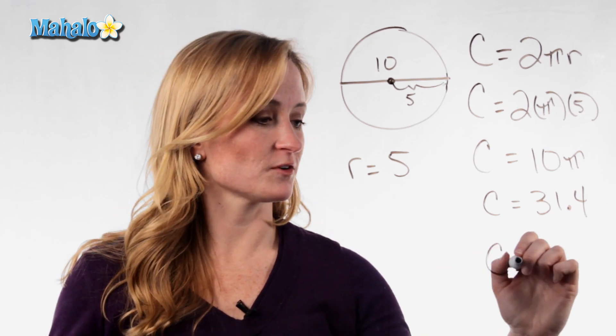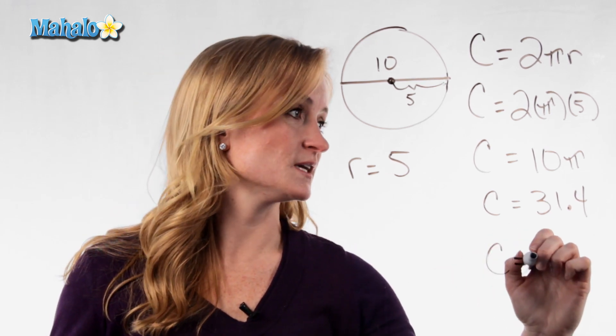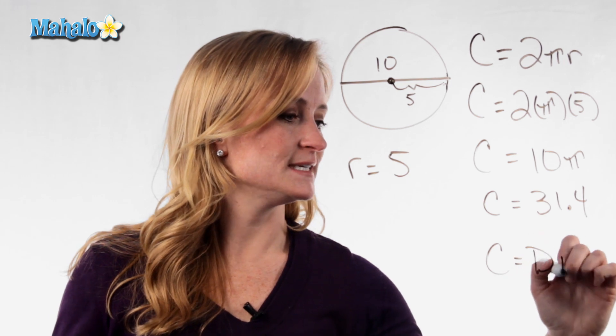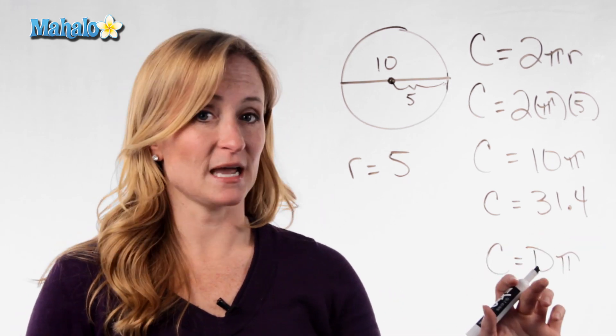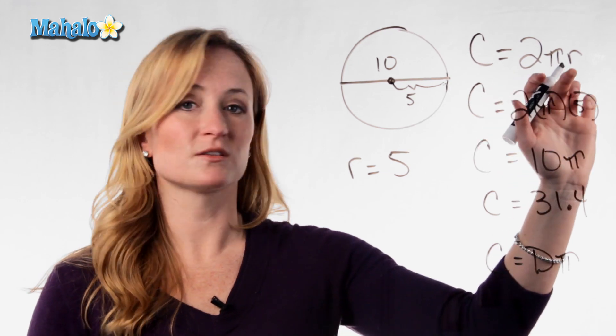It's also important to know that if you're looking up formulas, you may also see C equals D times pi as another formula for circumference. And that's because the diameter is twice the radius.